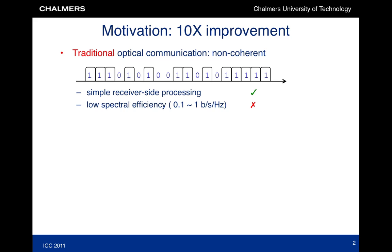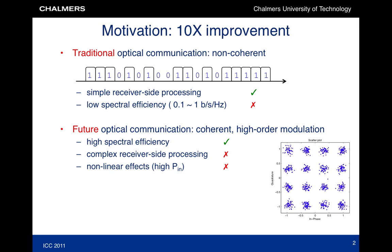The motivation of this research lies in the need to improve spectral efficiency of fiber-optical communication. While current systems typically work with on-off keying with its low spectral efficiency but simple hardware, researchers are now considering coherent communication with high-order modulation formats such as 16QAM. However, such formats will require more sophisticated signal processing and are more susceptible to non-linear effects in the fiber.